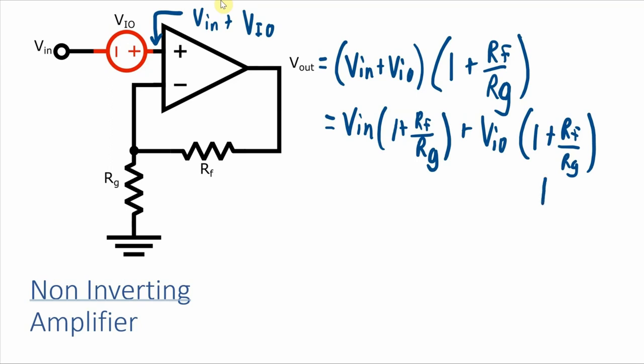So as you can imagine, if this gain is really big, then the contribution of the input offset voltage to the output voltage could also be very big. I mean, even if we're dealing with an input offset voltage of 1 millivolt, if this gain is 100, then the output is going to be affected by 100 millivolts.